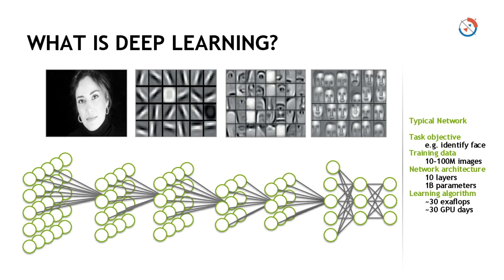These algorithms enable the system to understand patterns and extract features from the data, and hence understand that an apple is an apple. Later, if a similar apple is shown to the machine through a camera, radar, or lidar — depending on the use case — the system will be able to identify the new object as an apple. That is the fundamental approach of deep learning: train the machine by writing algorithms, and the training happens through a large amount of data.